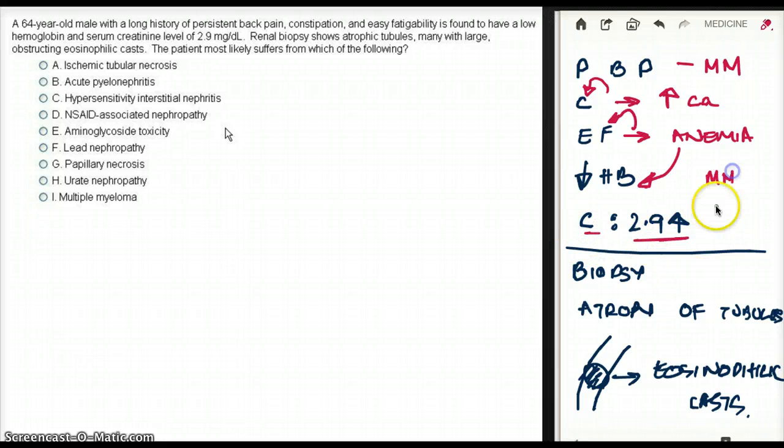Why? Multiple myeloma has Benz-Jones proteins, which goes and deposits in the kidney, causing kidney damage, which causes atrophy of the tubules. And there is also eosinophilic casts, which blocks the tubules in multiple myeloma. Multiple myeloma will also be associated with bone pain due to osteoclast activating factor. Multiple myeloma can lead to chronic renal failure due to hypercalcemia, where calcium can go and bind to the kidney parenchyma and cause renal failure.